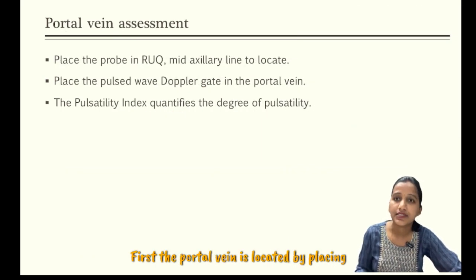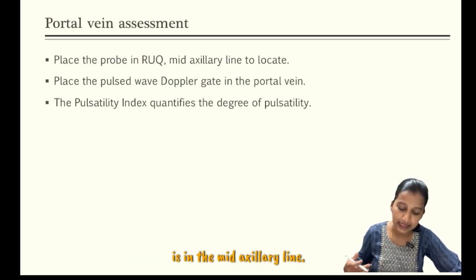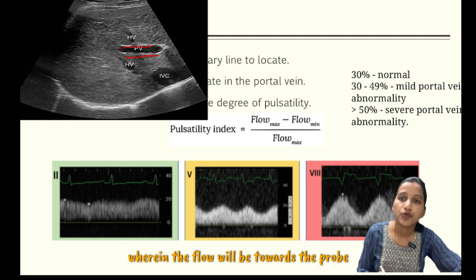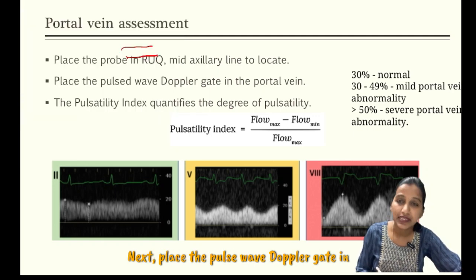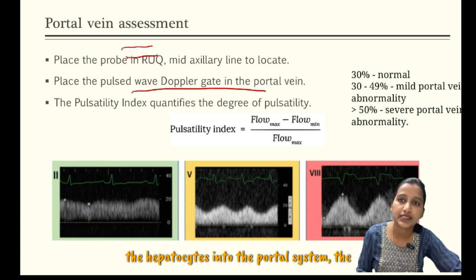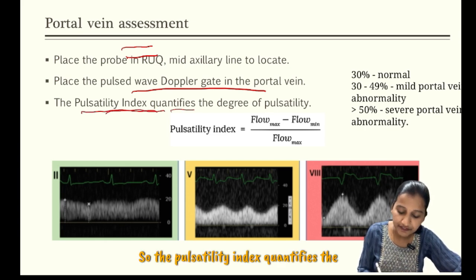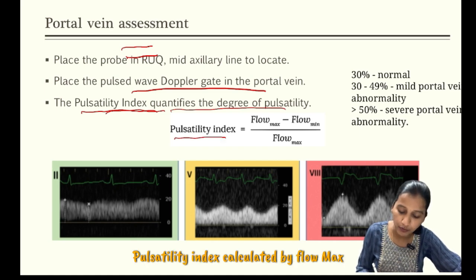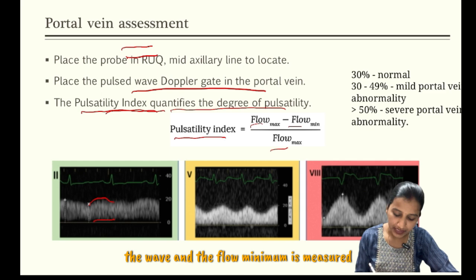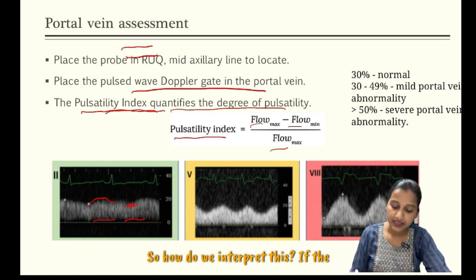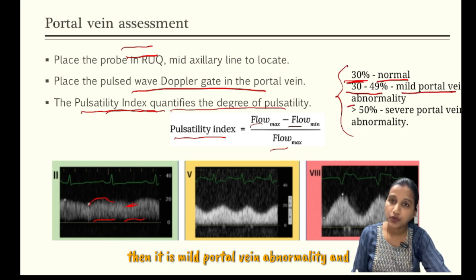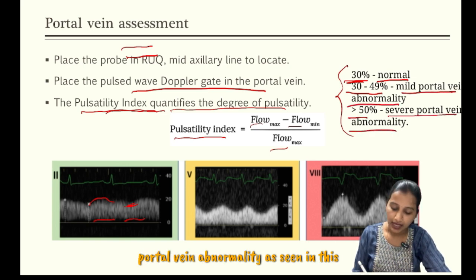Next, coming to portal vein assessment — the portal vein is located by placing the probe in the right upper quadrant in the mid-axillary line. The portal veins are best identified by the presence of thick and hyperechoic walls. Confirm with color Doppler wherein the flow will be towards the probe and the vein will be seen as red color. Then place the pulse wave Doppler gate in the portal vein. As venous congestion increases and pressure from the hepatic vein is transmitted across the hepatocytes into the portal system, the flow becomes pulsatile. The pulsatility index quantifies the degree of pulsatility and is calculated as: flow max minus flow minimum, divided by flow max. If the pulsatility index is less than 30%, it is normal; between 30 to 49% it is mild portal vein abnormality; and if more than 50% it is severe portal vein abnormality.